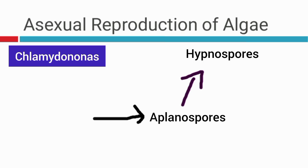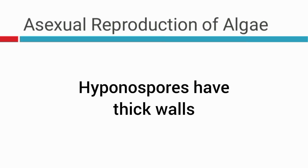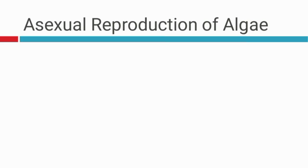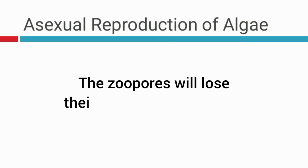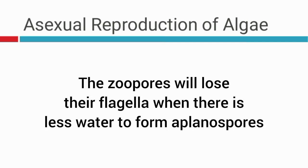In Chlamydomonas, the zoospores will lose their flagella and form the aplanospores, which will later differentiate into the hypnospores. The hypnospores have thick walls. This only occurs when there is less water — meaning the zoospores will lose their flagella and will not be able to move. They need their flagella to swim in water. When there is no water, that is when they form the aplanospores, which will later differentiate into the hypnospores.